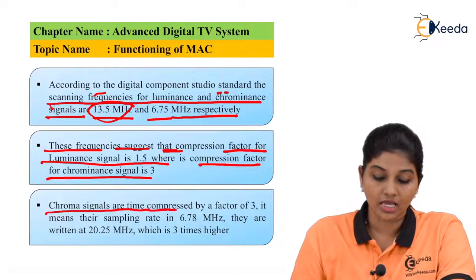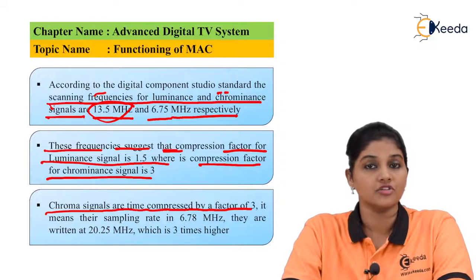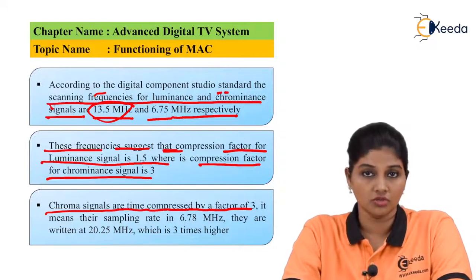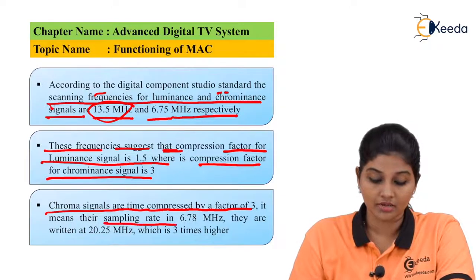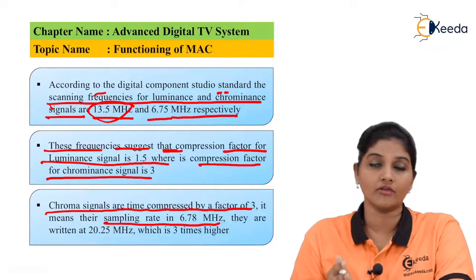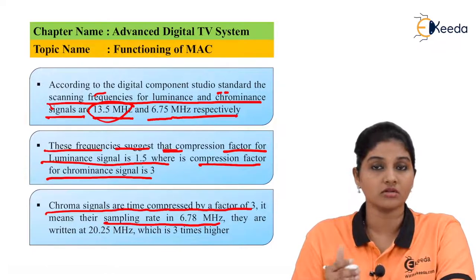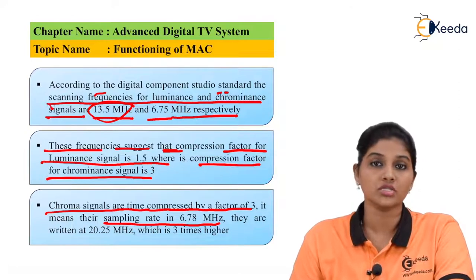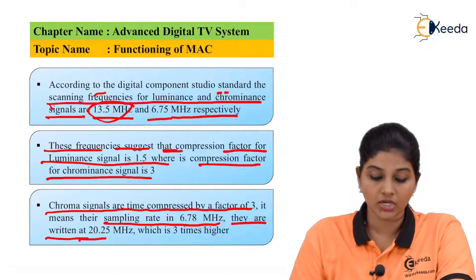The chroma signals are time-compressed by a factor of 3. The chroma signal — which is the chrominance signal, a combination of saturation and hue — is compressed by a factor of 3. This means the sampling rate is 6.73 MHz. With a chroma compression factor of 3, the sampling rate of 6.73 MHz is approximately double, and they are written at 20.25 MHz, which is three times higher.